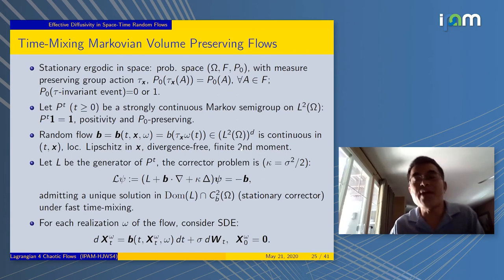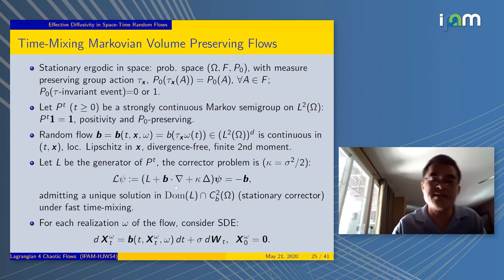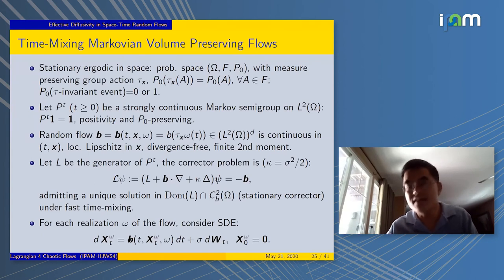What is the corrector problem? Let L be the generator of the Markov process. Then you get L plus b dot gradient plus κ Laplacian. It's an advection-diffusion-like operator. The right-hand side is minus b. In the periodic case, we call it V. But it's very similar. The only thing is, this problem is even more difficult to solve, because it's stochastic.